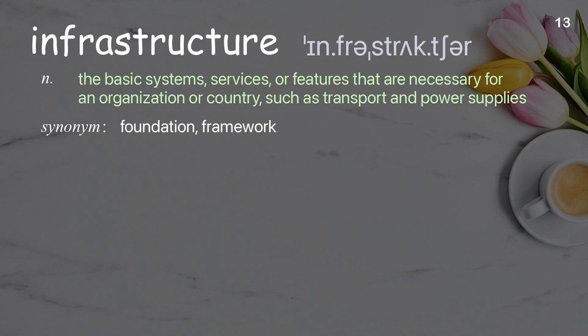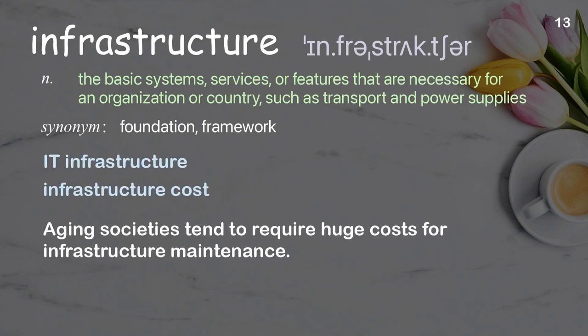Infrastructure: The basic systems, services, or features that are necessary for an organization or country, such as transport and power supplies. Examples: I.T. infrastructure. Infrastructure cost. Aging societies tend to require huge costs for infrastructure maintenance.